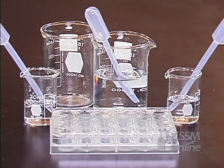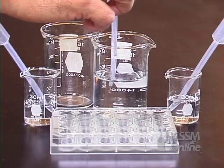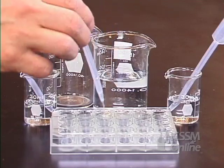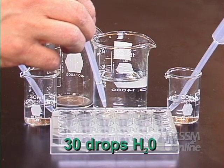You're going to make a series of solutions from pH 1 to pH 13 by doing a serial dilution. In the second row of your 24-well plate, place 30 drops of distilled water.